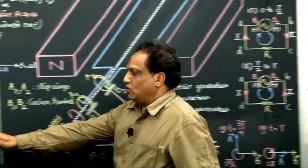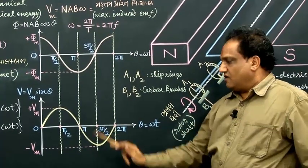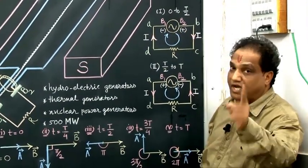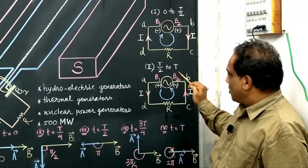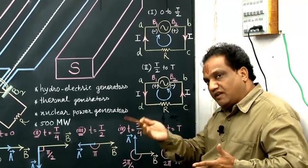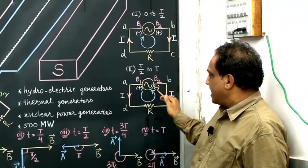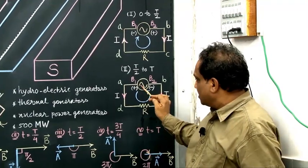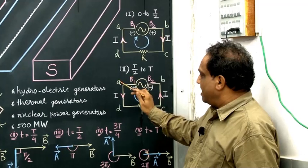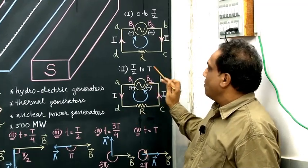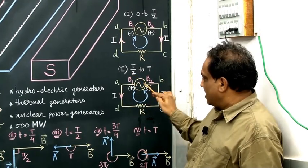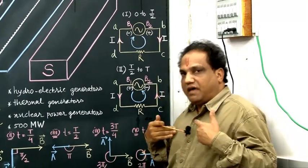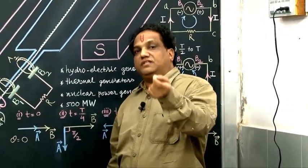In the next half cycle, from T/2 to T, the potential difference becomes negative — potential at B2 with respect to B1 becomes negative, meaning potential at B1 with respect to B2 is now positive. So current flows B1 to A, A to D, D to C, C to B, B to B2, B2 to B1 — in an anticlockwise direction. Earlier it was clockwise, now it is anticlockwise. The current in this coil changes its direction of flow alternately.